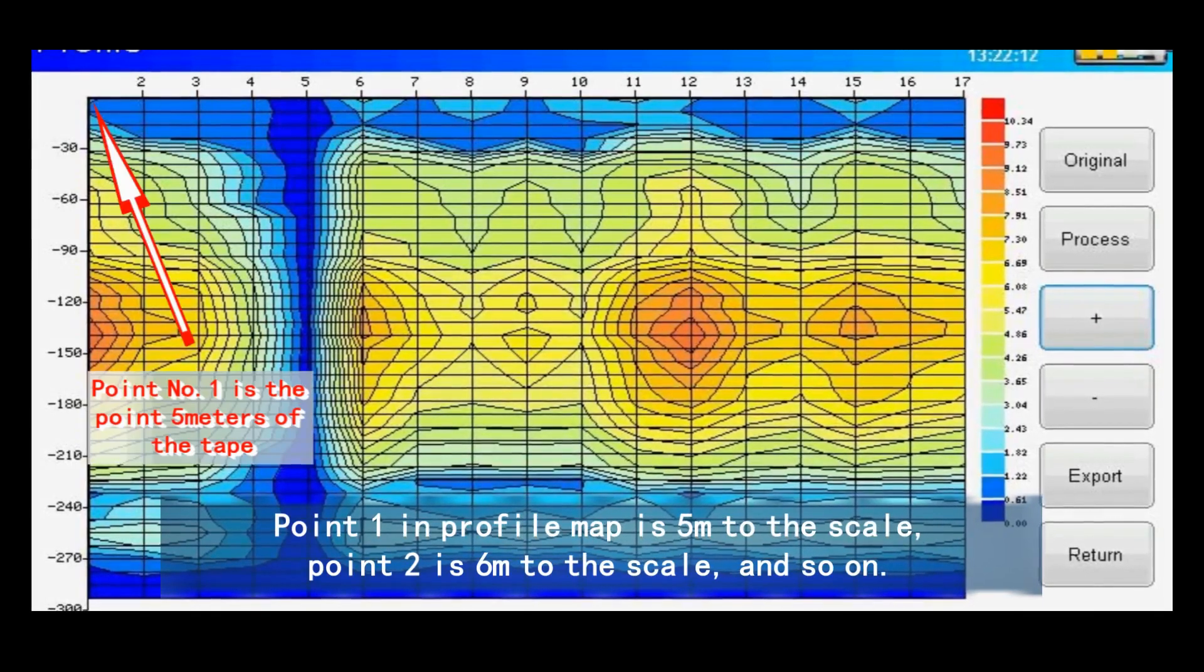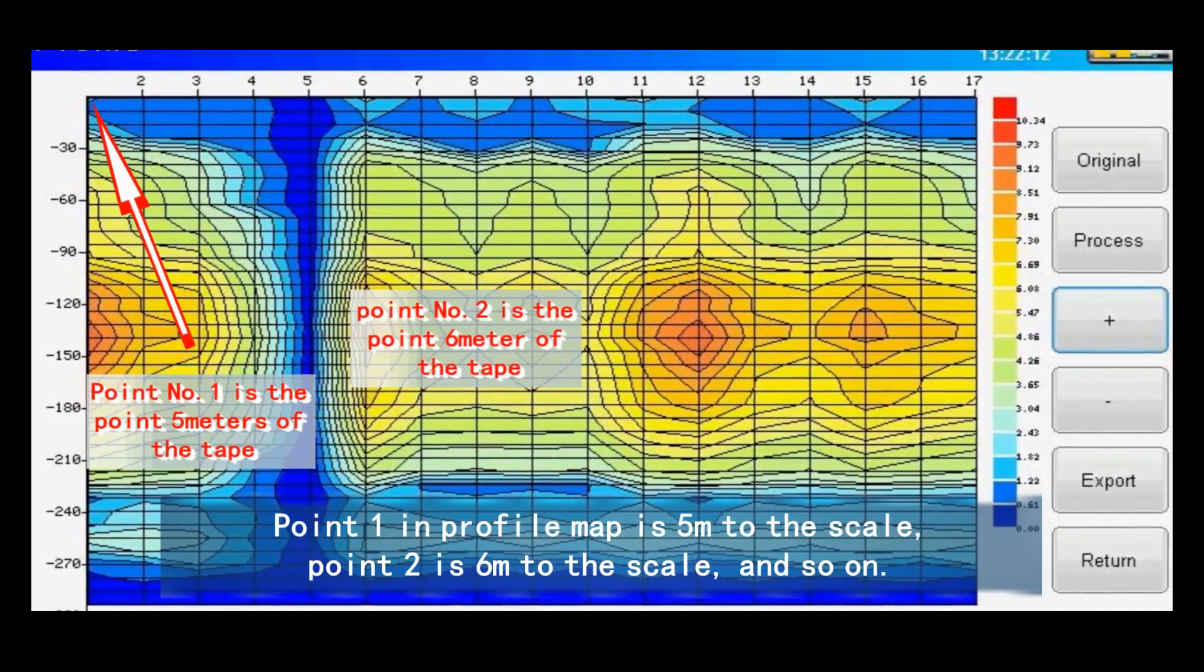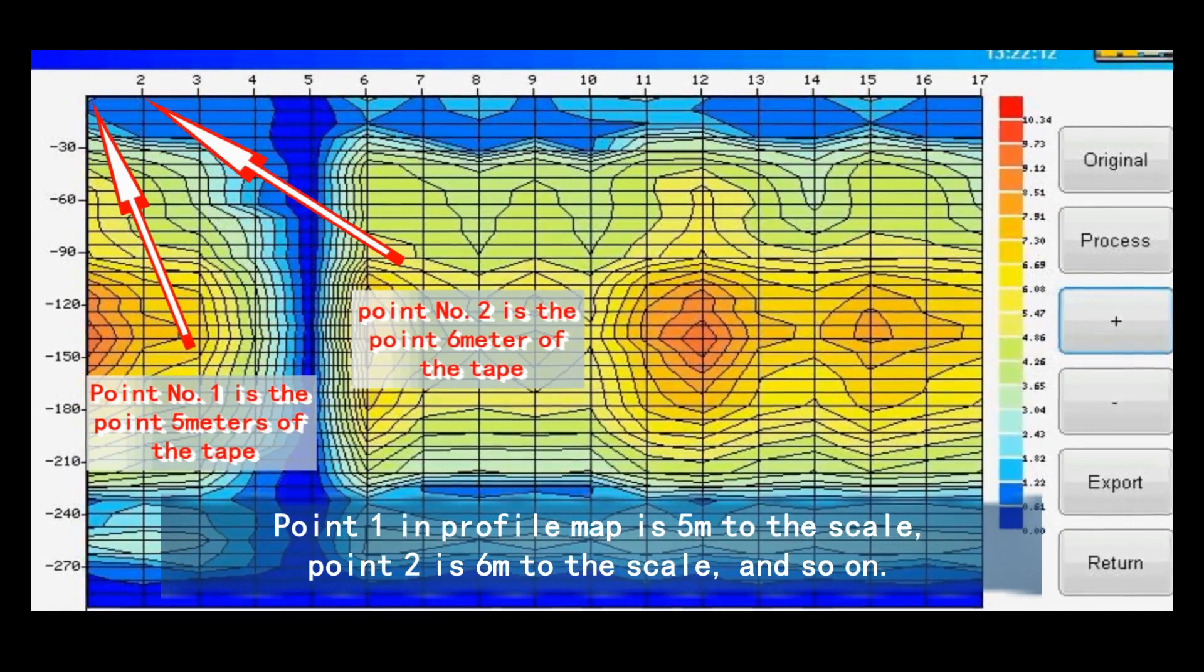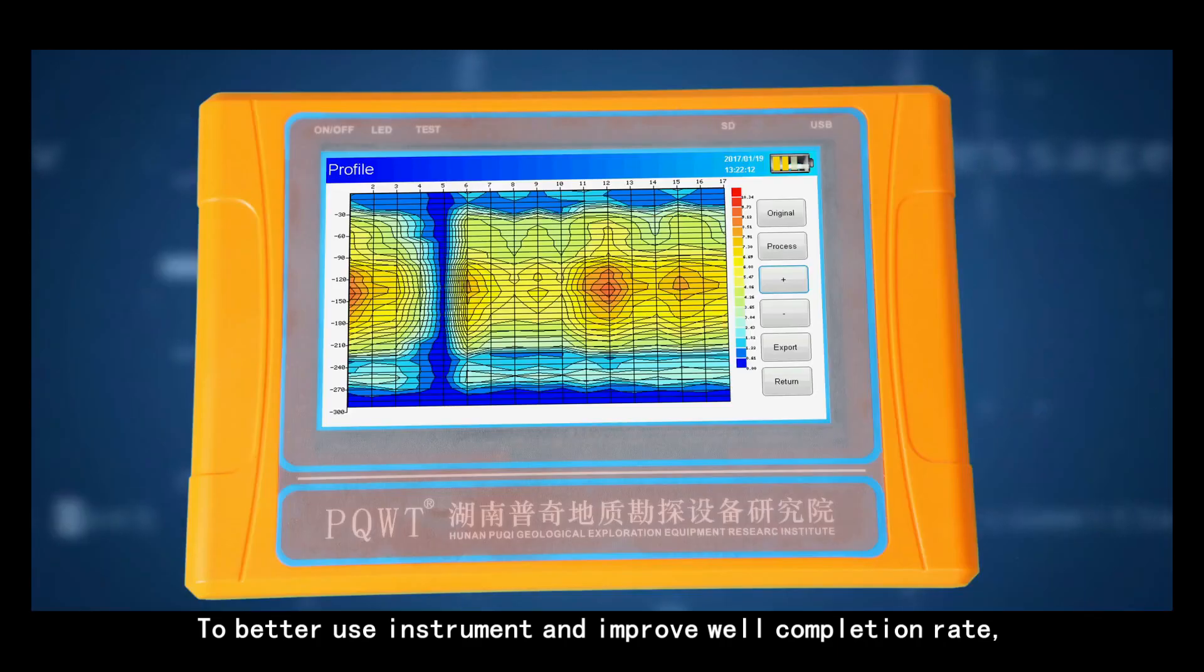Point one in profile map is 5 meters on the scale. Point two is 6 meters on the scale and so on. To better use instrument and improve well completion rate,